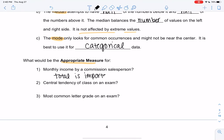As a salesperson, your monthly income is interesting, but you're also interested in your total income. So total is important. So the mean would be the best measure here.